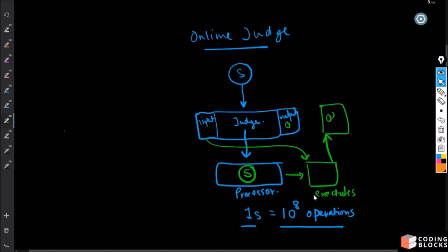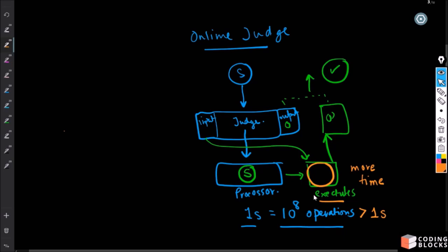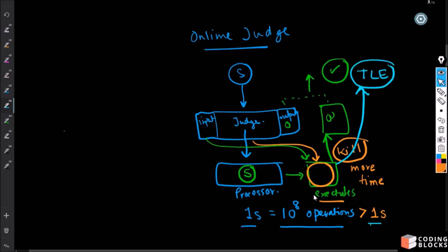When the submission goes to the processor, your program executes, takes the input, and generates some output O. The judge tries to match if the generated output matches the actual expected output O'. If it matches, you get AC (Accepted). But during execution, if the judge detects that your program has taken more time than the required limit — say the limit is one second and your program exceeds it — the judge issues a kill command and terminates the process.